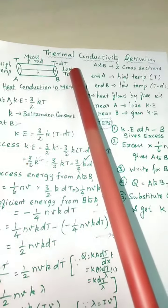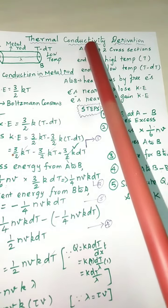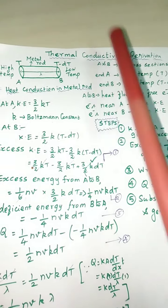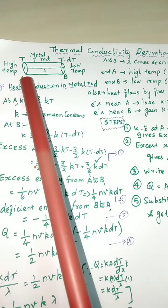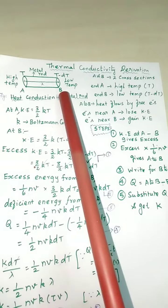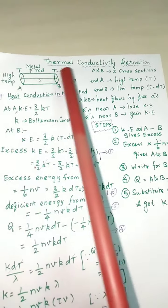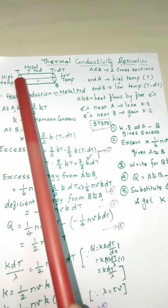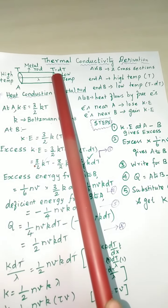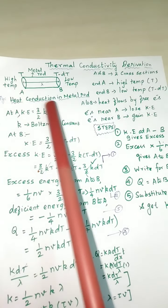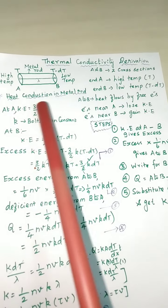Thermal conductivity: at the end A to B, at the end B. This is high temperature, here low temperature. Temperature T, temperature T minus DT. First, kinetic energy is 3 by 2 kT.